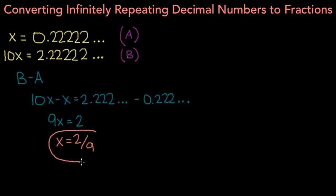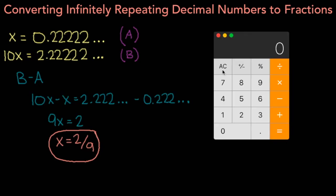And this fraction, 2 over 9, is 0.22222, where the 2's repeat on forever, expressed as a fraction. In order to verify that we have done this conversion correctly, let's use a calculator. So we plug in 2 over 9, and we should get 0.22222, and when we perform this division, that's exactly what we get. So we know that we have converted this infinitely repeating decimal to a fraction successfully.